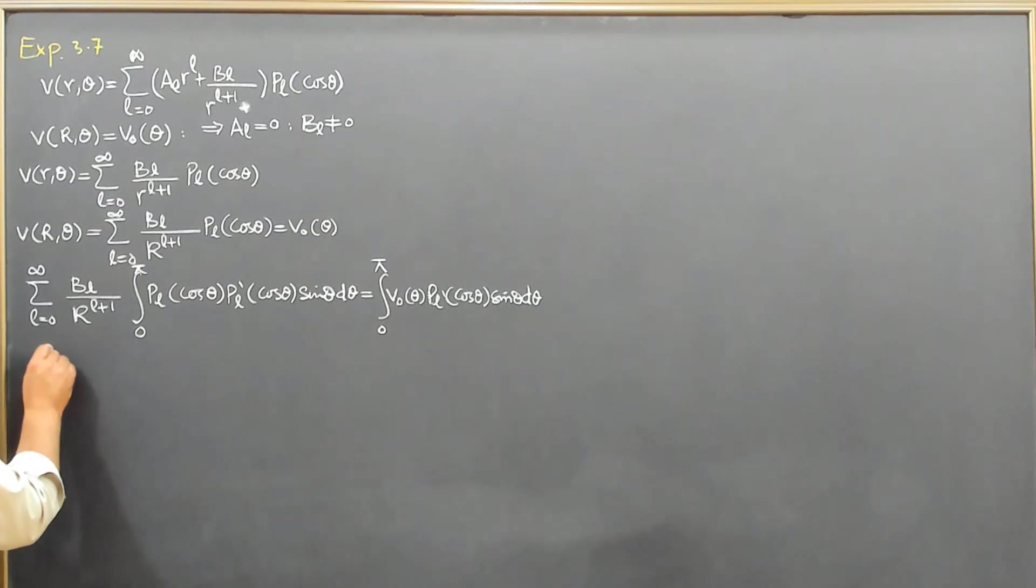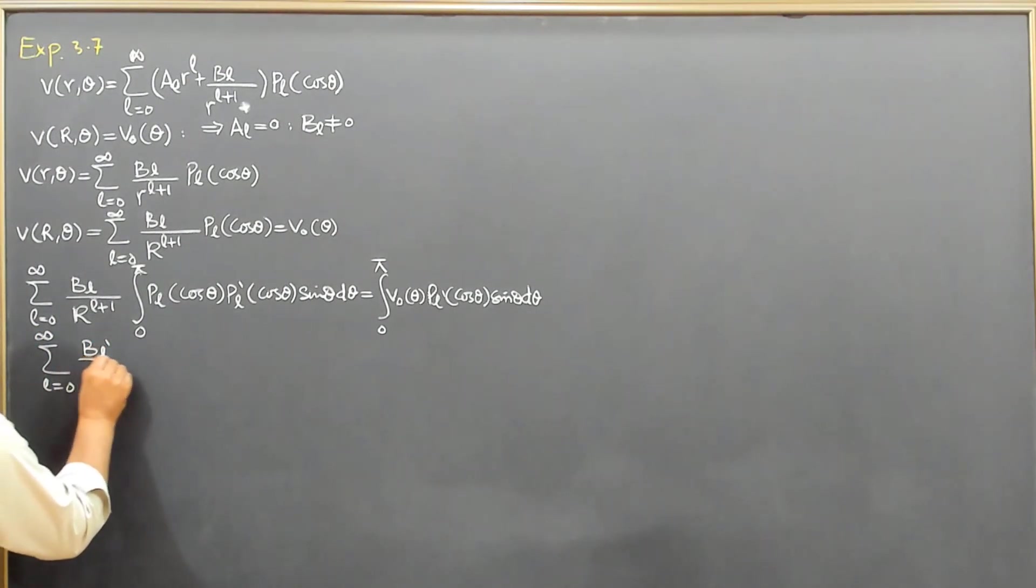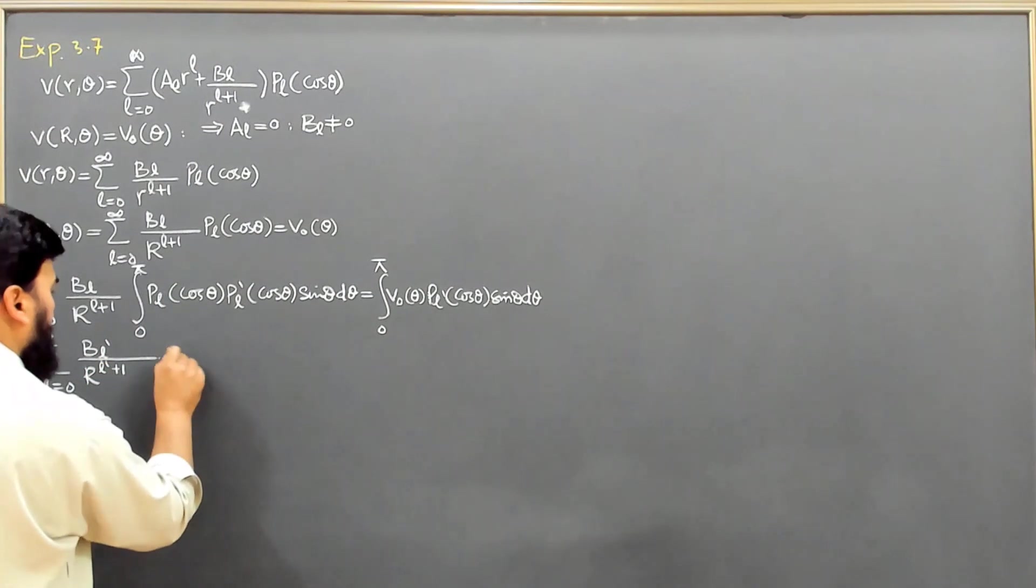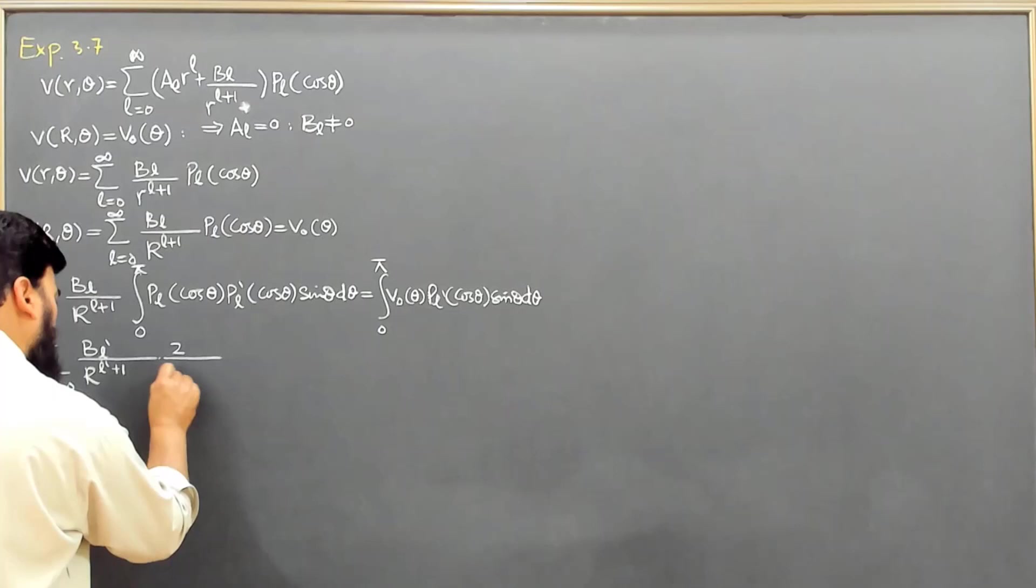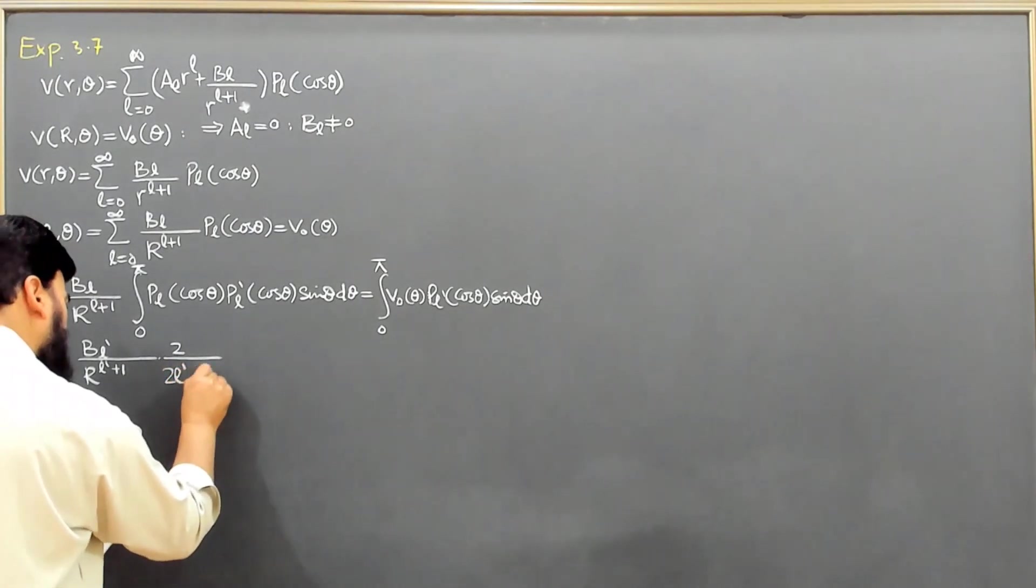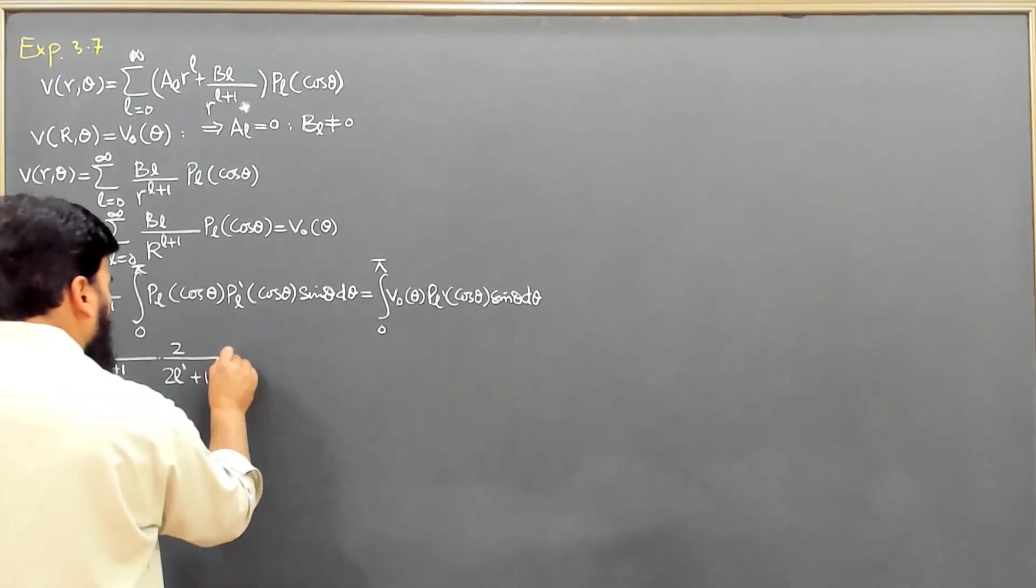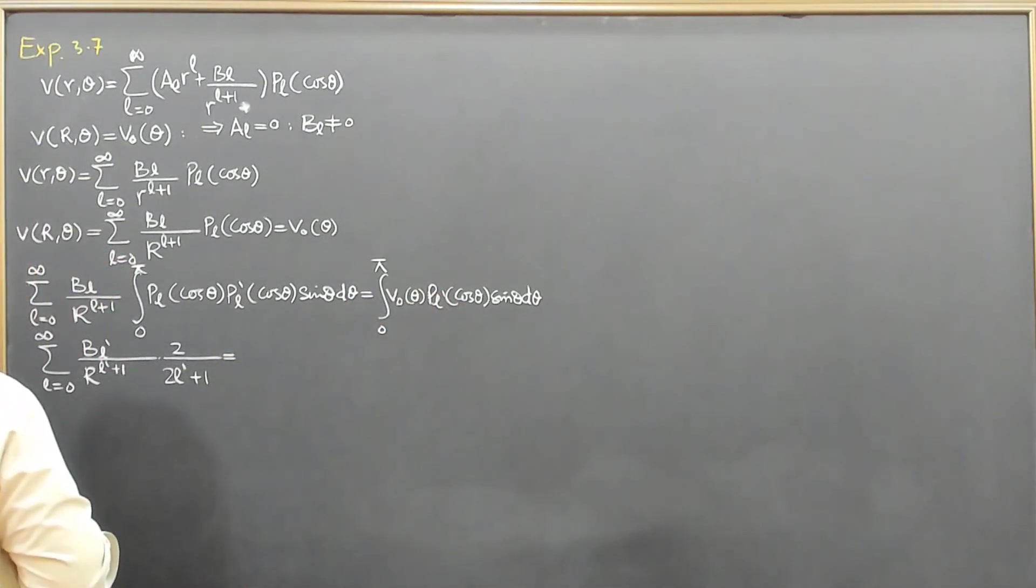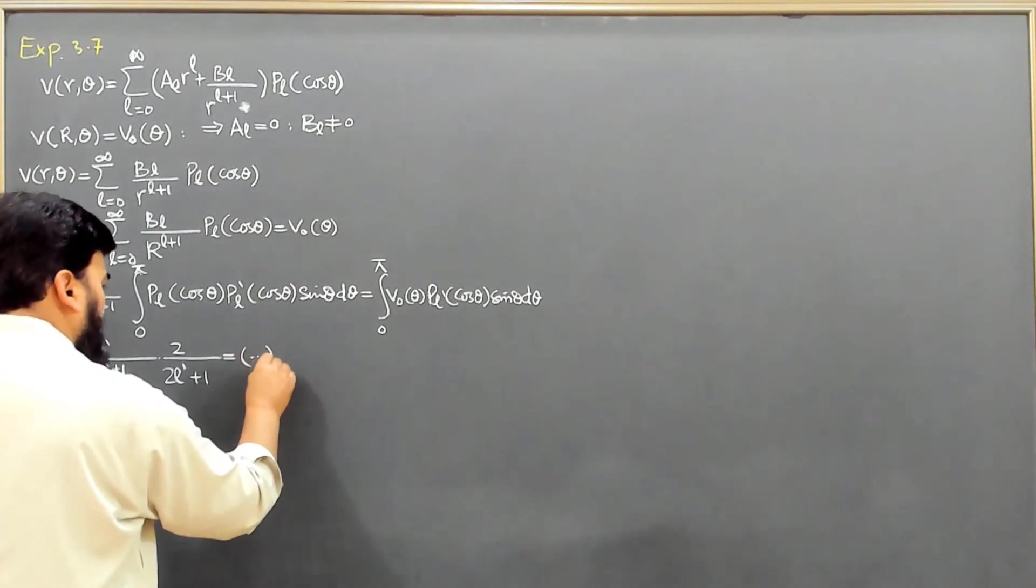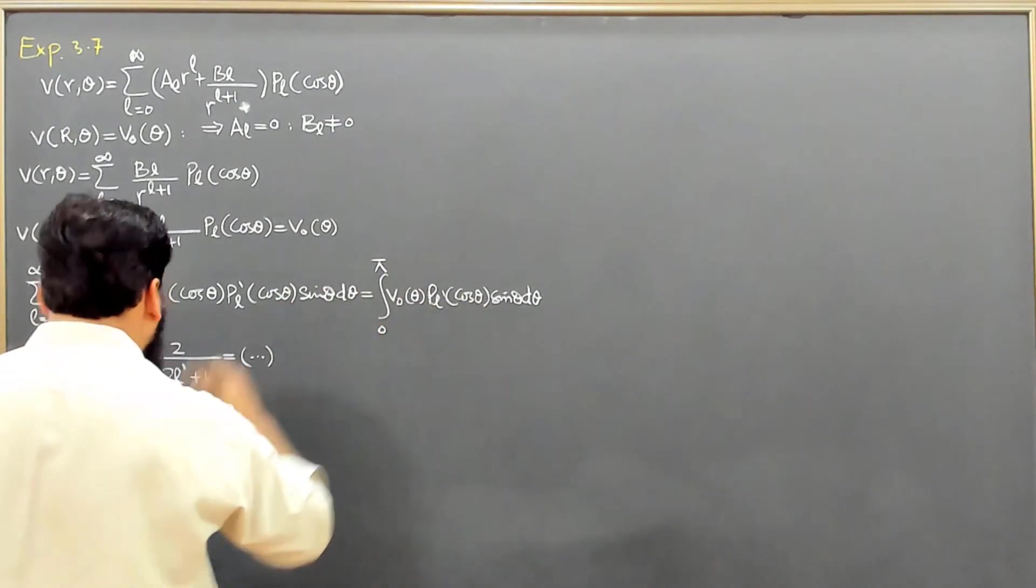So this will come out to be summation on L from 0 to infinity: BL'/R^(L') when L equals L', times 2/(2L'+1), equal to this value. Let me not repeat writing this one.